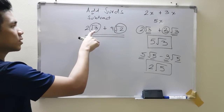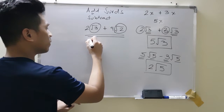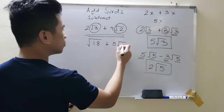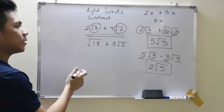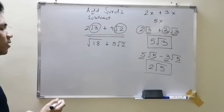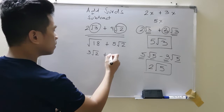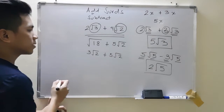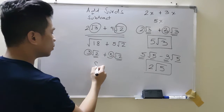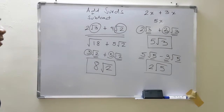We can't add them because they have different surd parts. But if you have something like square root of 18 plus 5 root 2, that doesn't mean you can't add them. Check whether 18 can be simplified. Based on our earlier simplification, square root of 18 can be written as 3 root 2. So we get 3 root 2 plus 5 root 2. Since they now have the same surd, add the numbers: 3 plus 5 gives 8 root 2.